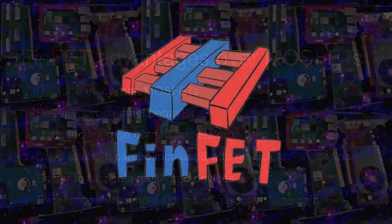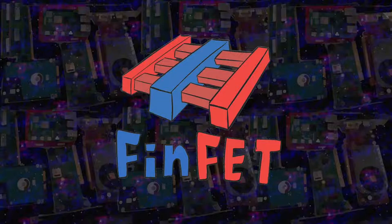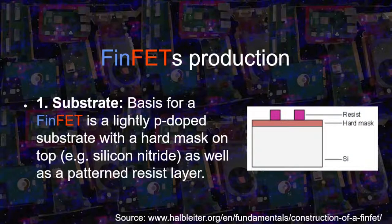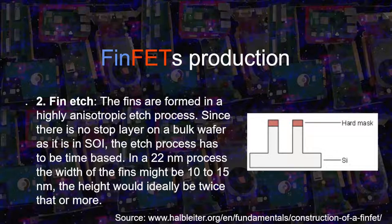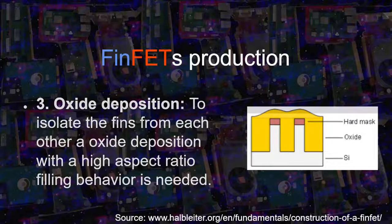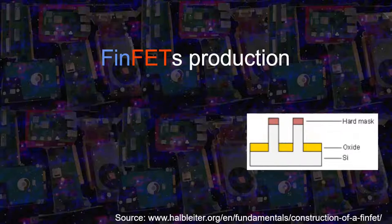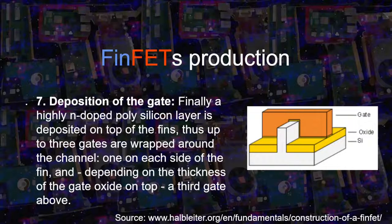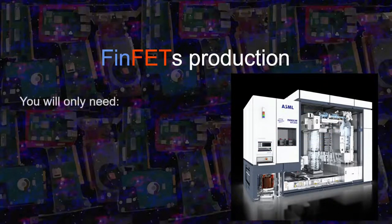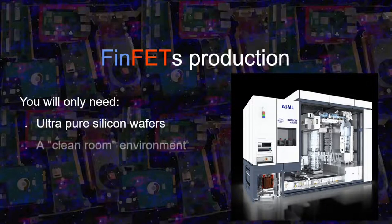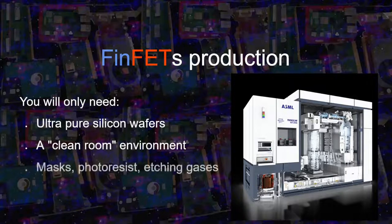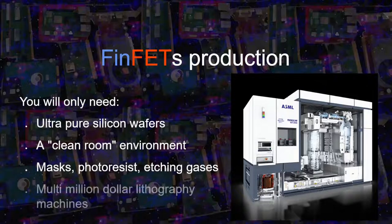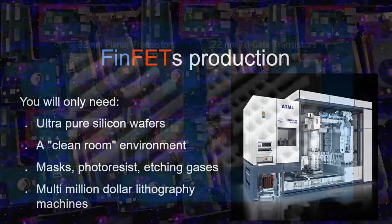And how can we build this kind of transistor? It is a relatively simple process to understand, but it has several steps. First, we need a high-purity silicon substrate, lightly doped with a P-type dopant, and a hard mask layer on top. The resist is lithographed — similar to a photo-developing process — where a pattern is drawn on the surface. After that, the material is removed from around the fins by a chemical process. Then a layer of oxide is deposited to insulate the fins, and the layer is leveled. Part of the oxide is removed, and then a new layer is formed to insulate the gate. Finally, the gate is deposited on the fins and the transistor is ready. To do all this, you will only need 99.9999% pure silicon wafers, a super clean environment, masks, photoresist, and other chemicals for etching — and of course, a lithography machine that in some cases costs over 100 million dollars. Very simple. Anyone can do this in their own kitchen.